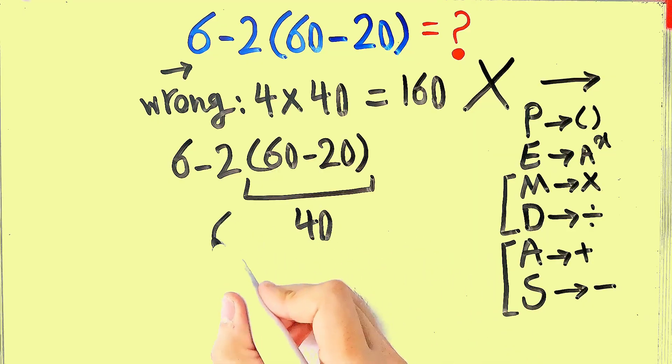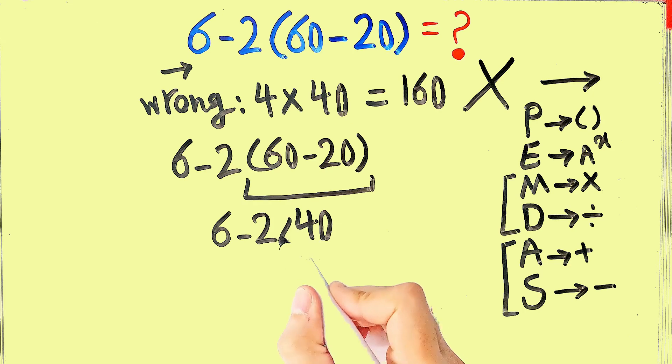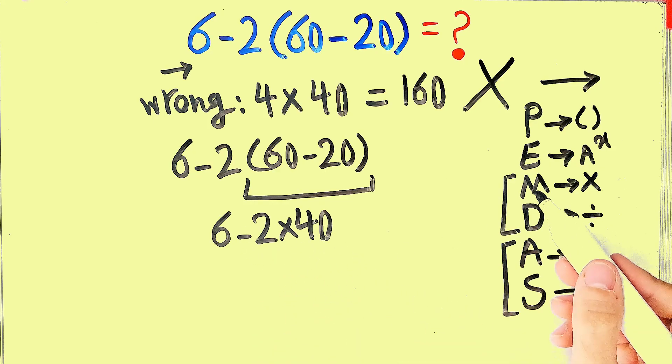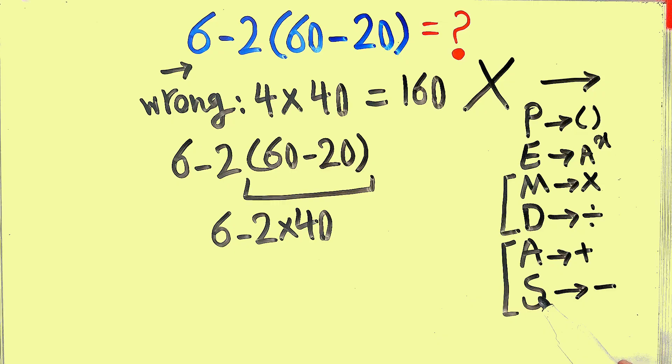Now we have 6 minus 2 then times 40. We have subtraction and multiplication. First, we simplify this multiplication. Because the multiplication has higher priority than subtraction. Negative 2 times 40 equals negative 80.